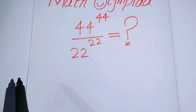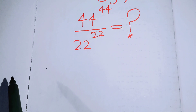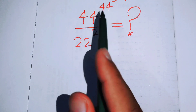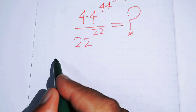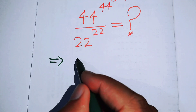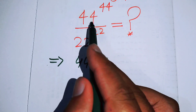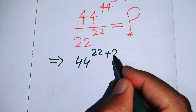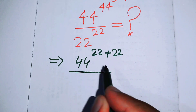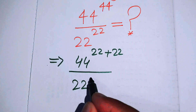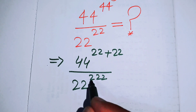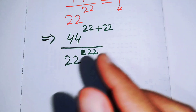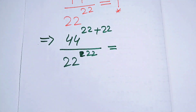Here we have 44 to the power of 44. We will write the exponent of 44 — its base and its exponent — as 22 plus 22, over 22 to the power of 22. Now we can break the exponent of this term.